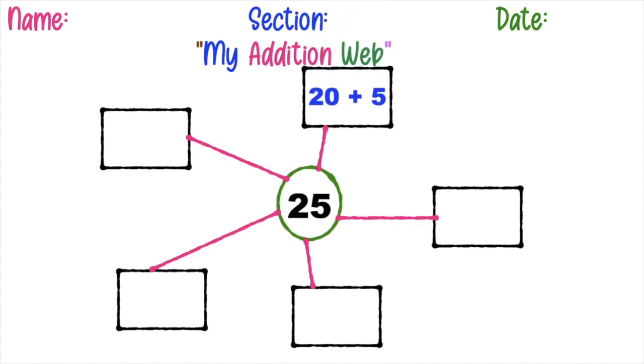I'm going to give 20 plus 5 is equal to 25. Then 19 plus 6 is equal to 25. Then 10 plus 15 is equal to 25. 24 plus 1 is also equal to 25. Then lastly, 25 plus 0 is equal to 25.